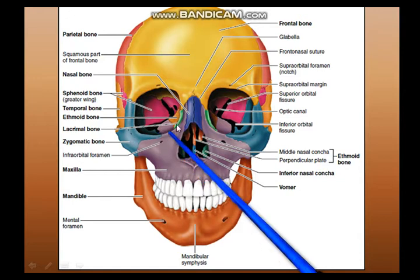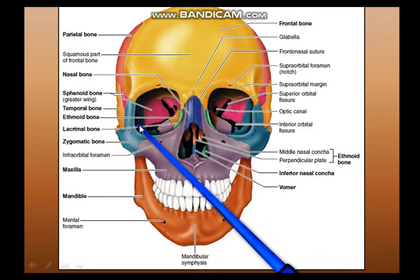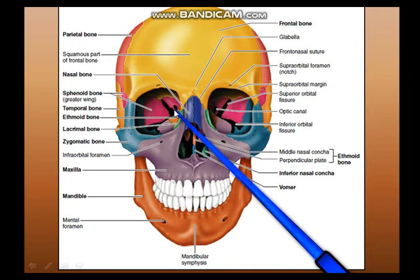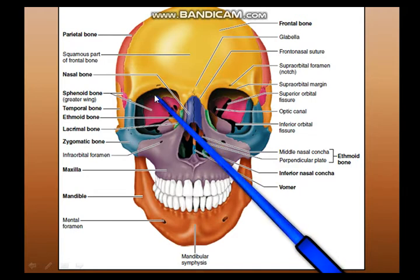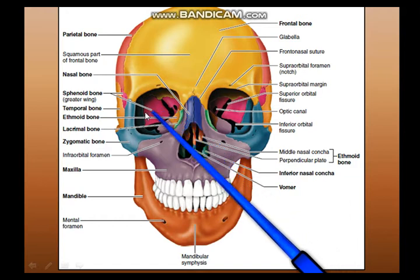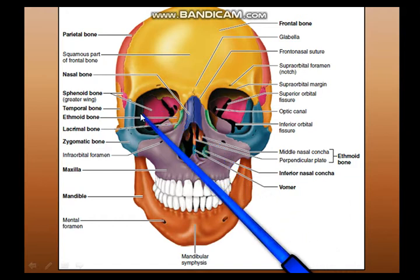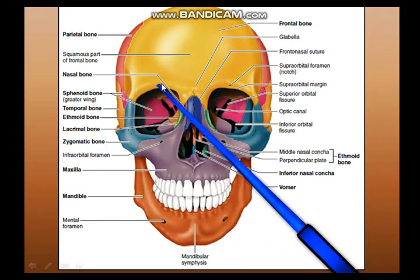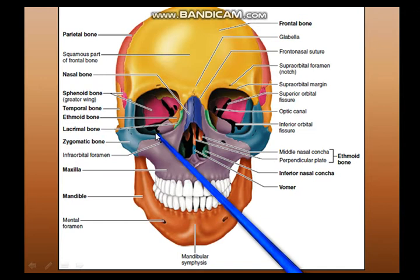Actually, the orbit is in the shape of a four-sided pyramid with its apex somewhere here, and it has a roof, a floor, a medial wall and a lateral wall. Now to look at the structures within the bony orbit we will look at an enlarged picture.